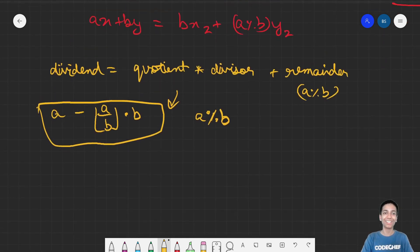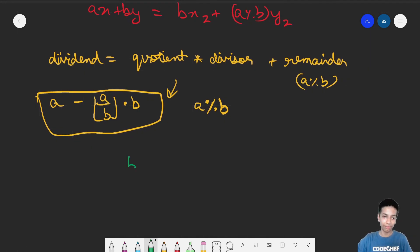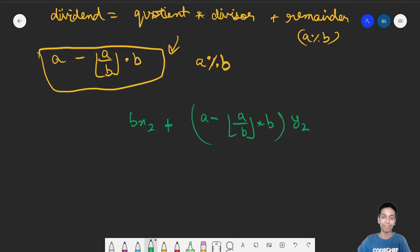We actually have finished it. We have AX plus BY equals BX2 plus A minus A by B's floor times B times Y2. If I open these brackets now, this is our mathematics heavy video. But anyways, this is pretty rudimentary maths. We have BX2 plus AY2 minus A by B's floor times B times Y2.